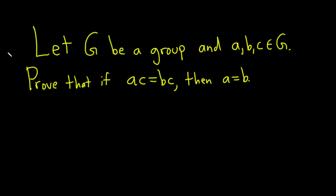Let G be a group, and a, b, c in G. Prove that if ac equals bc, then a is equal to b.